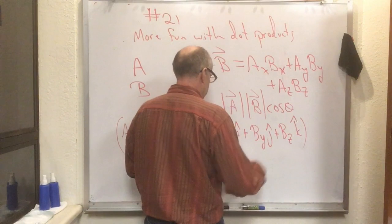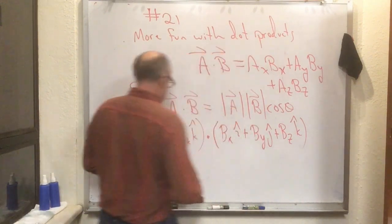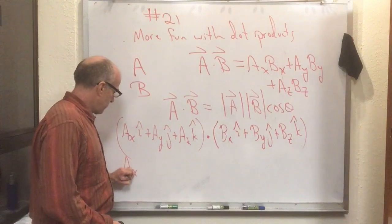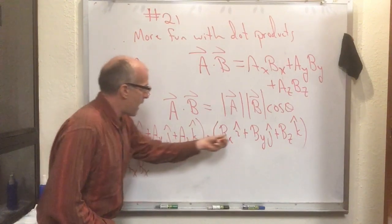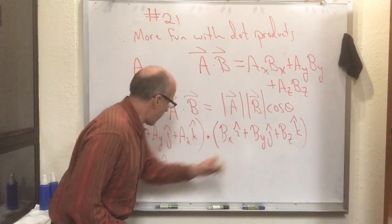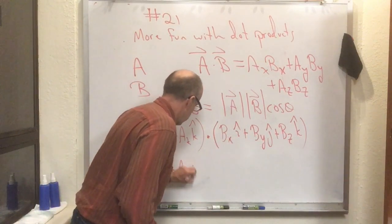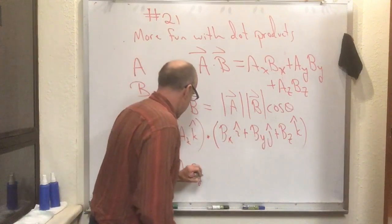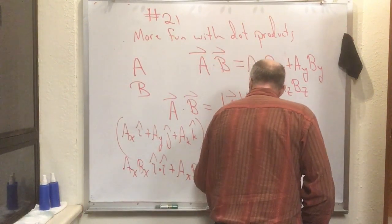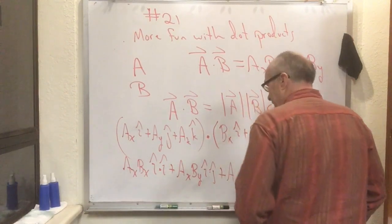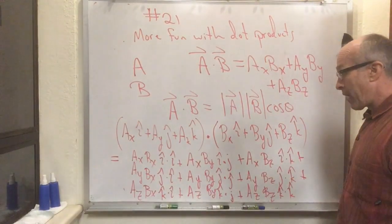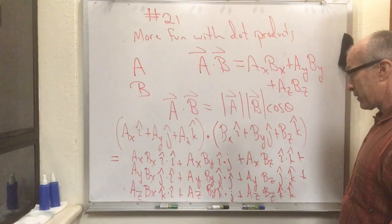I've got three things in the first term and three things in the second term, so that means I've got nine terms total. That gives me an ax·bx term with i-hat dot i-hat, an ax·by term with i-hat dot j-hat, an ax·bz term with i-hat dot k-hat, and six more. I wrote out all nine terms, and it looks like an awful mess.